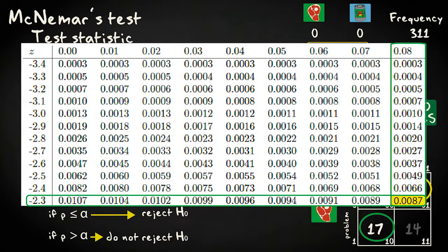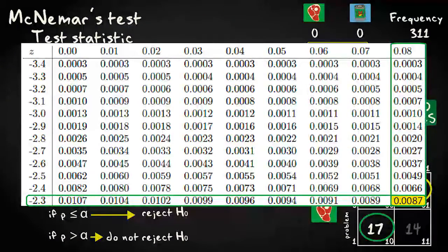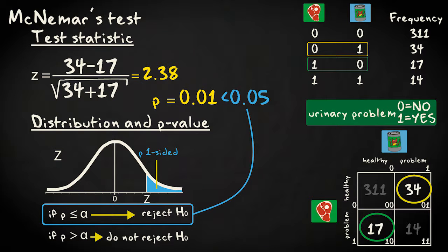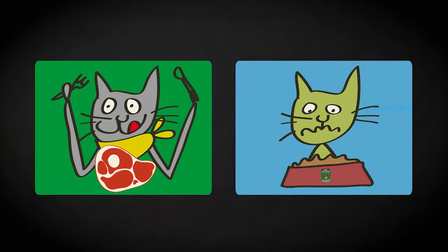If we look up the p-value in a table, or calculate it with statistical software, we find a value of 0.01. This value is smaller than the significance level of 0.05, so we can reject the null hypothesis in favor of the hypothesis that the proportion of cats with urinary problems is lower when we compare them with cats on a canned food diet.